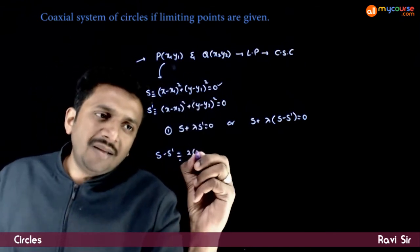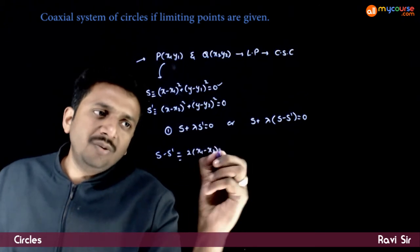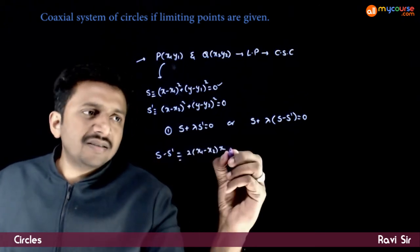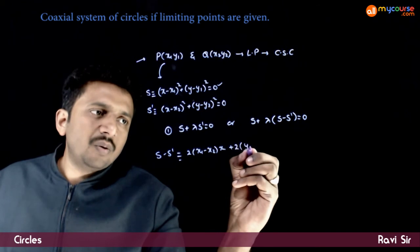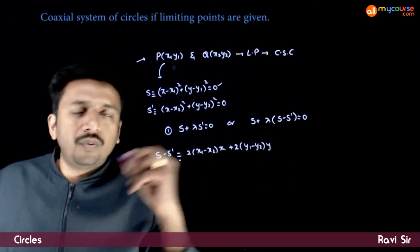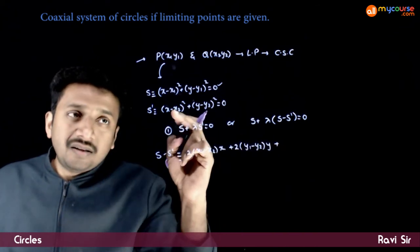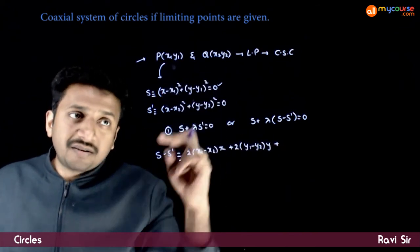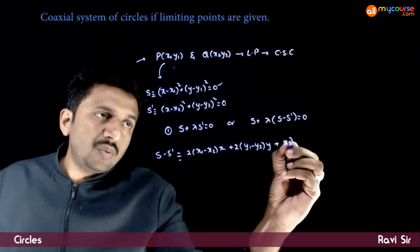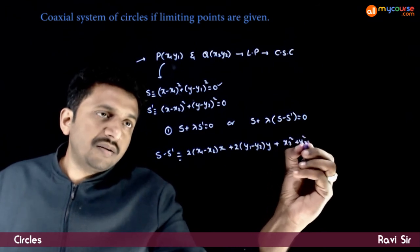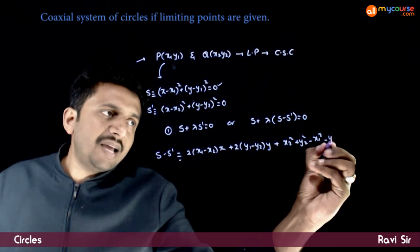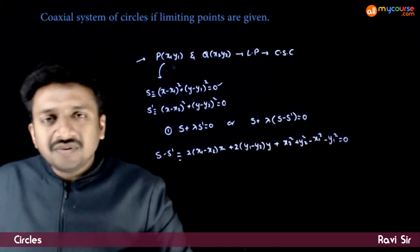You get 2(x1 - x2)x + 2(y1 - y2)y + x2² + y2² - x1² - y1² = 0.